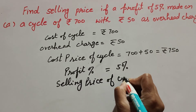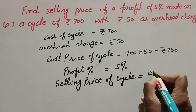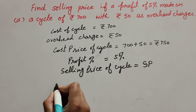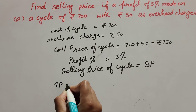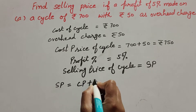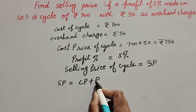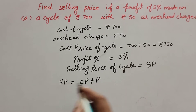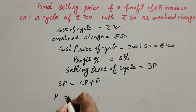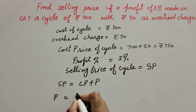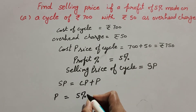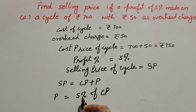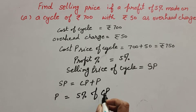The selling price of the cycle is what we have to find, so we suppose it is SP. We know the formula to find selling price: SP is equal to cost price plus profit. We need the profit, but the given thing is profit percentage, so first we find the profit. Profit is equal to profit percentage — that is 5 percent — of cost price.